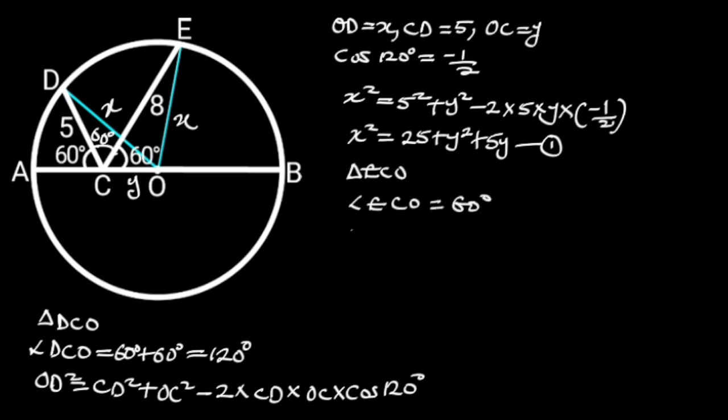OE squared is equal to CE squared plus OC squared minus 2 times CE times OC times cos 60 degrees.